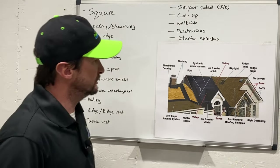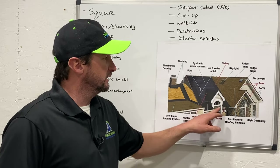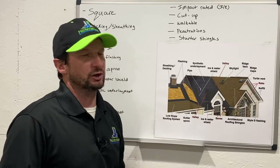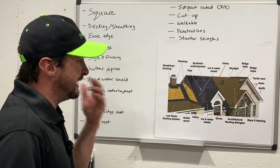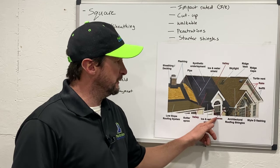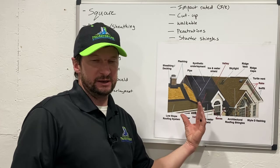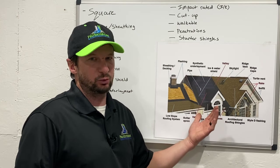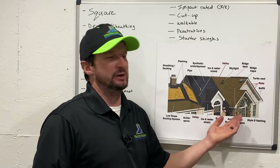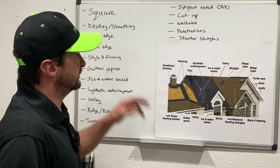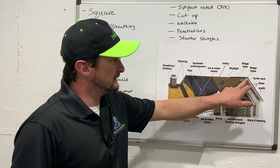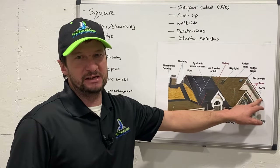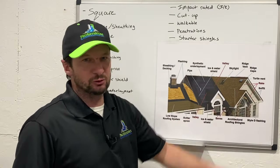Next is the eave edge — that's essentially your gutter edges, where your gutters sit. I always remember it by thinking that if you took an E and turned it on its side, it would almost look like a gutter. And the next one is the rake edge. That's where your two sections of roof come together and make an upside-down V.